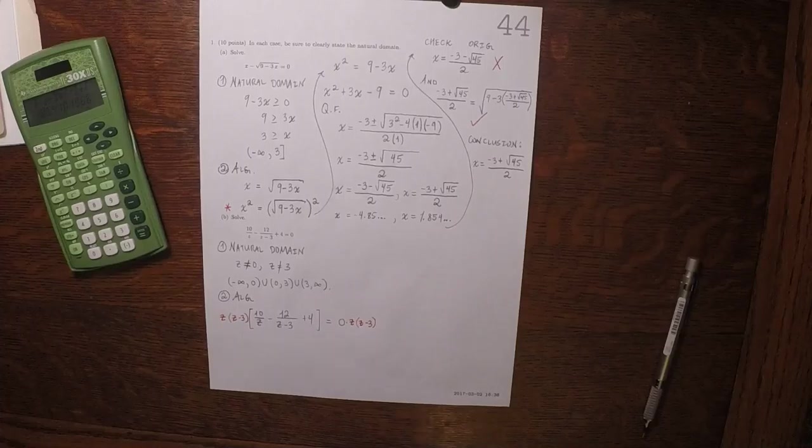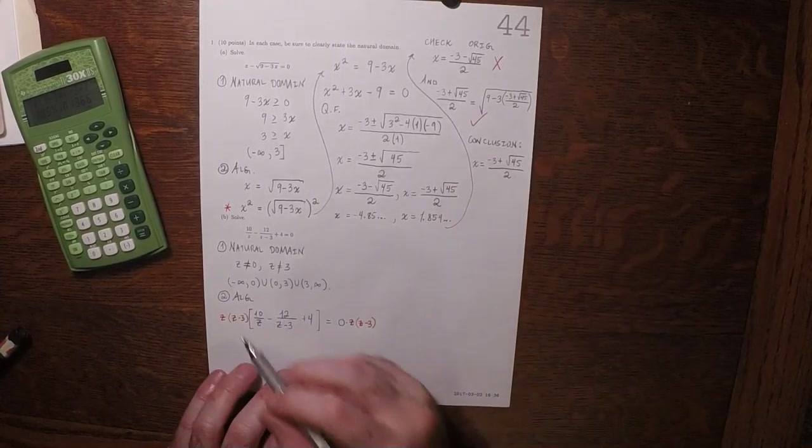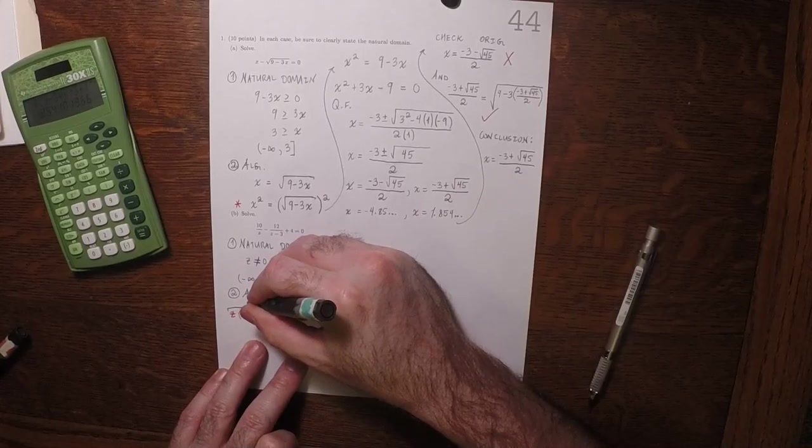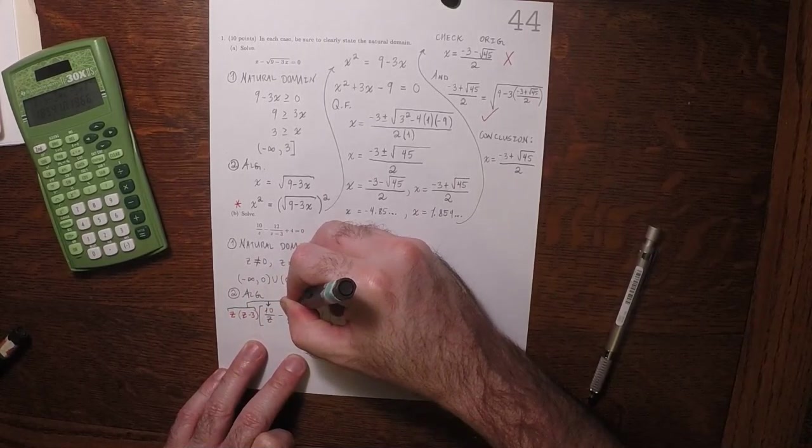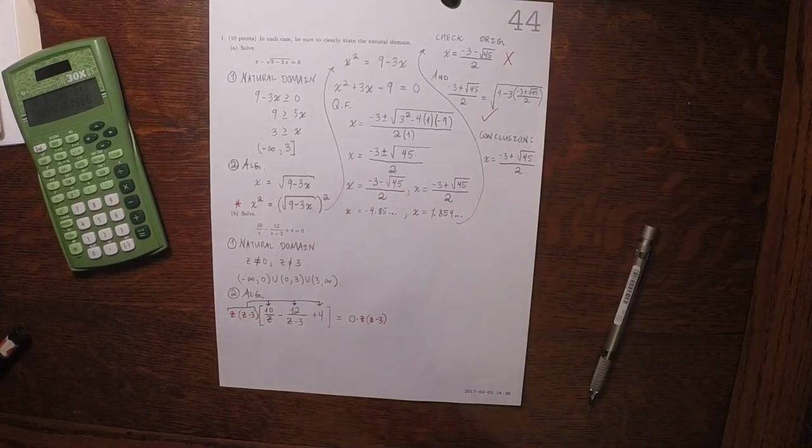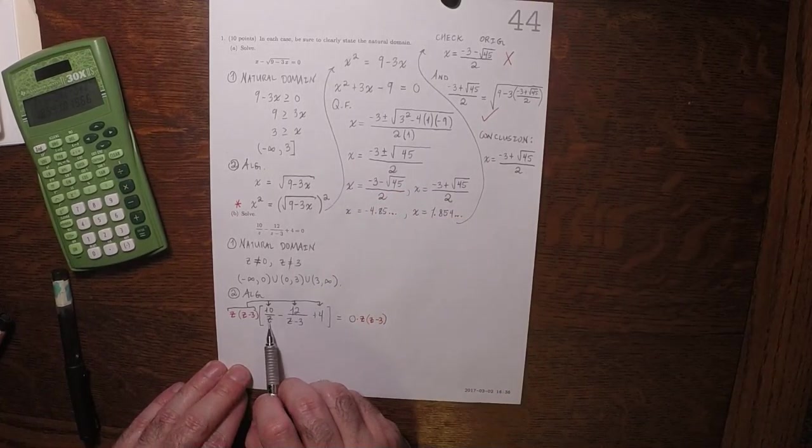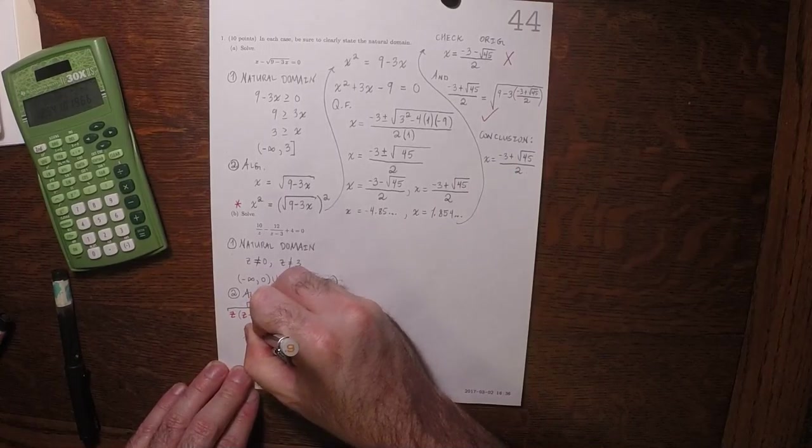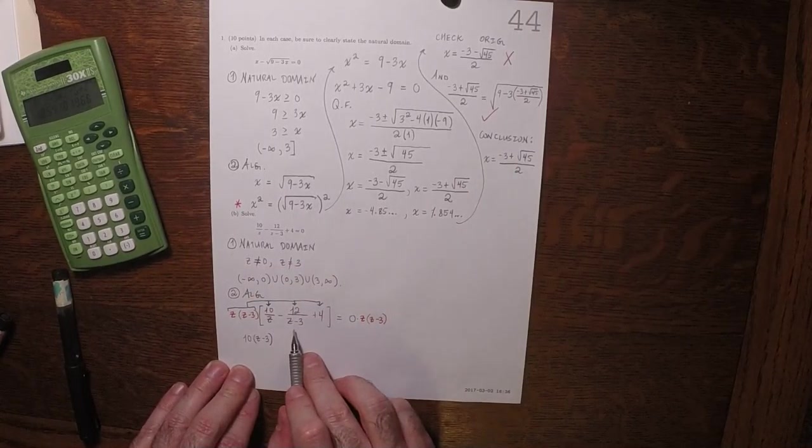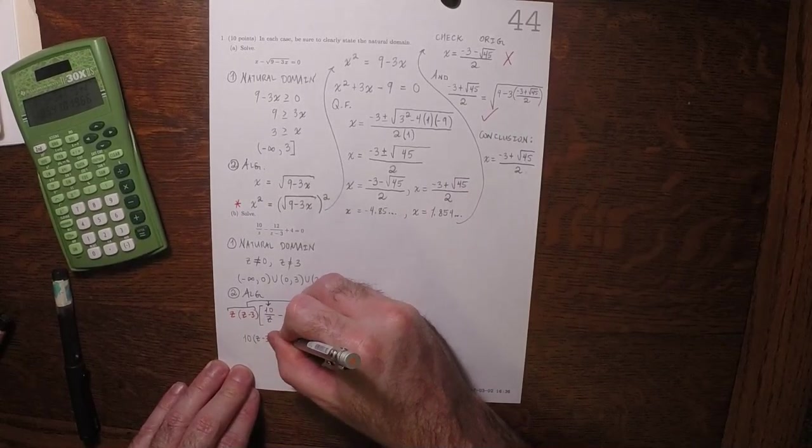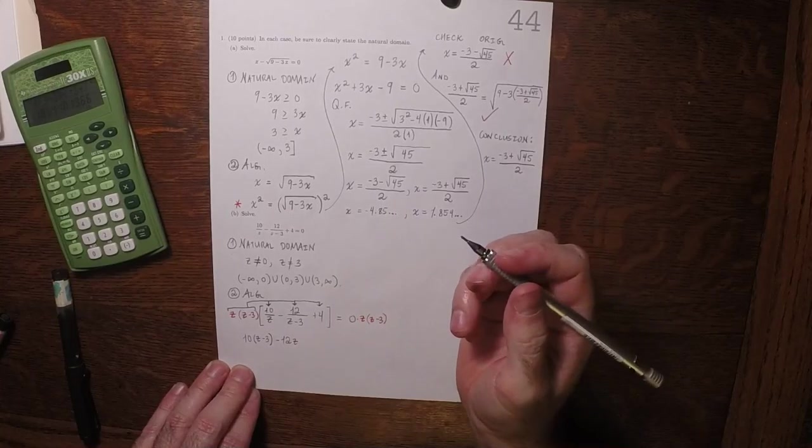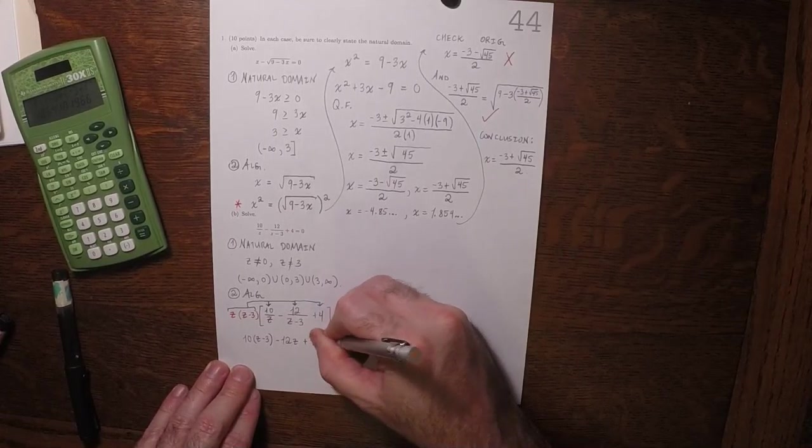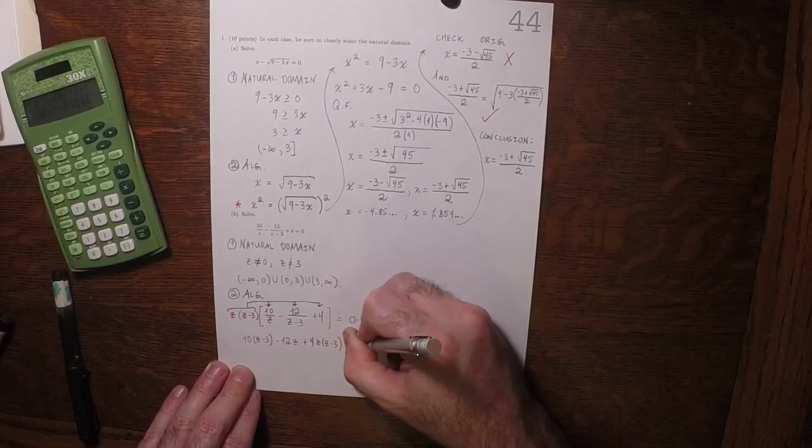And what we're going to do is multiply both sides by z times z minus 3. The purpose of doing that is so that we can get the numerators to cancel. When we distribute this to there and to there and to there, this z will cancel with that z and what will remain is a z minus 3. So we'll get 10 times z minus 3. And then when we distribute it to the middle term, the z minus 3's will cancel. So that will be minus 12z. And then when we distribute it to the 4, nothing cancels. So that will be plus 4z, z minus 3 is equal to 0.